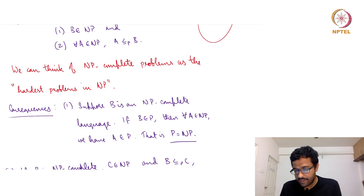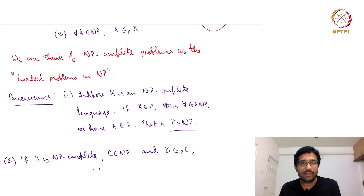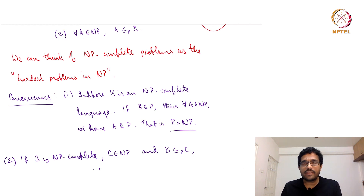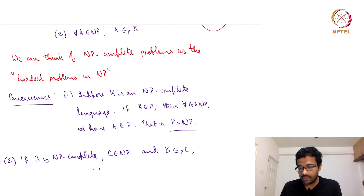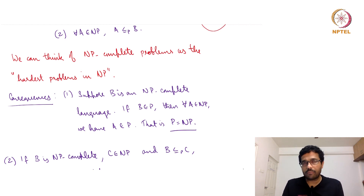One of the main consequences is that if B is an NP-complete language and if B is shown to have a polynomial time algorithm — B is in P — that means for all A in NP, A has a polynomial time algorithm. That means all the languages in NP have polynomial time algorithms, which means NP equals P.